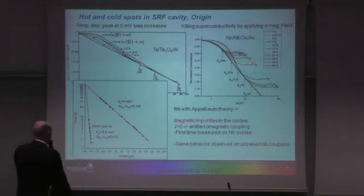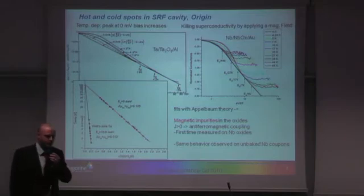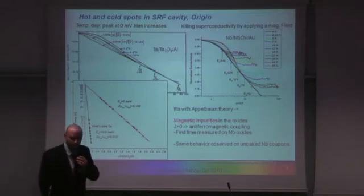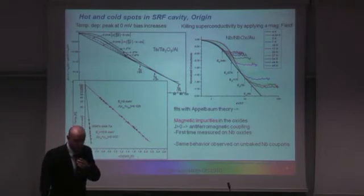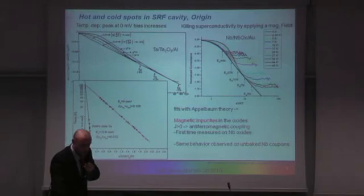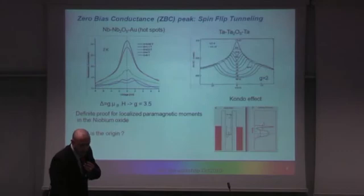The origin of these magnetic impurities has been postulated for many years to be due to oxygen vacancies, and this is true for a lot of oxides — vanadium oxide, titanium oxide, and a bunch of others — which have been measured by different techniques.